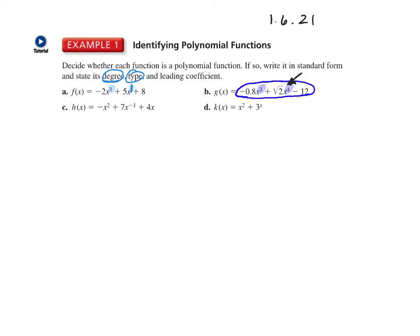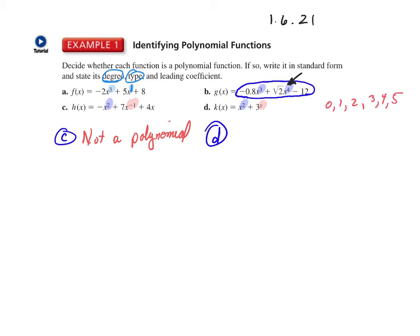Let's look at C. We check exponents: x squared is fine, but red flag — x to the negative one. We can't have negative exponents, so it's not a polynomial and we're done. For D, we check exponents: x squared is fine, but red flag — a variable as an exponent. Exponents have to be numbers like zero, one, two, three, four, five — not variables. So D is also not a polynomial.